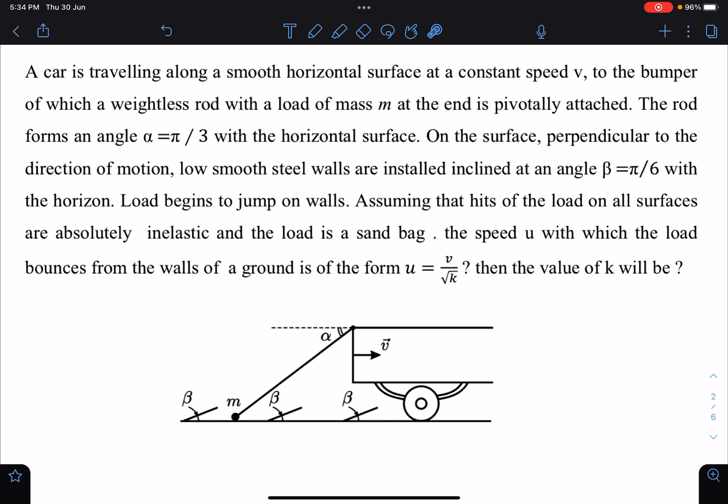You would have seen speed breaker kind of thing. Assuming that the hits of the load on the surfaces are absolutely inelastic - please remember this is very important - and the load is a sand bag. The idea is this load will just move along this wall or bump only. The speed u with which the load bounces from the walls on the ground is of the form u = v/√k, then the value of k will be?